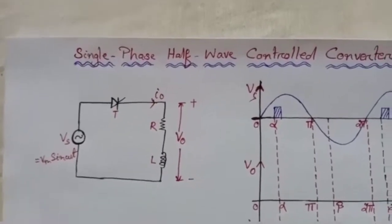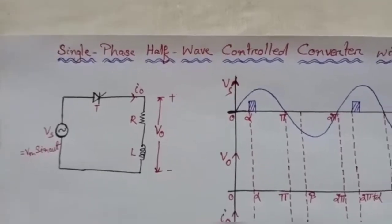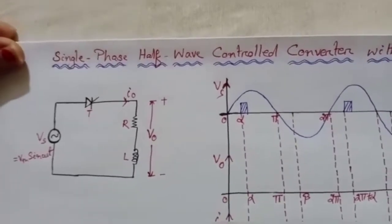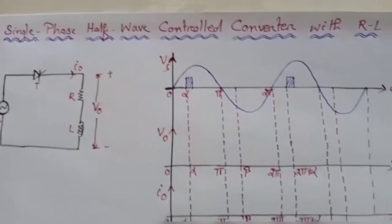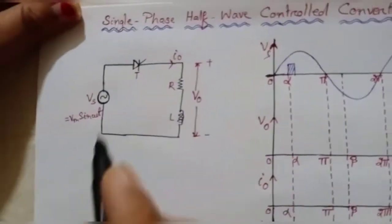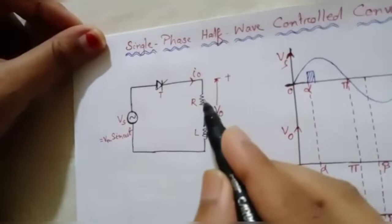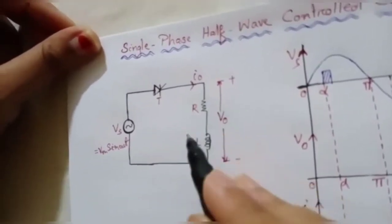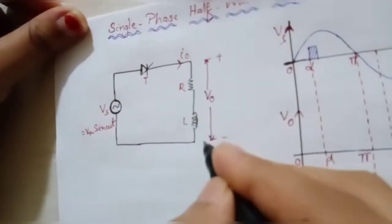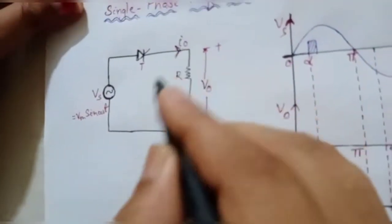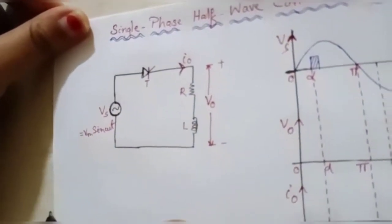Welcome to Electrical Spark. In this lesson we will study about the single-phase half-wave controlled converter with RL load — resistive and inductive load. Here is the circuit diagram. We are using a thyristor, which is a controlled switch, and R and L in series as the load. VS is the supply voltage, V0 is the output voltage, and I0 is the output current.